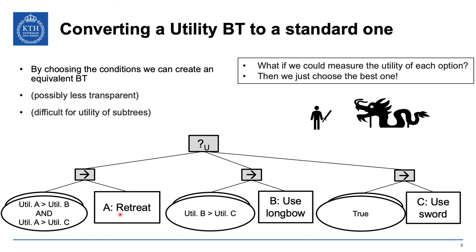If the tick reaches the second child, A wasn't the highest, so check if B's utility is higher than C's — then B runs. The last child always runs if you get that far. This creates behavior equivalent to the utility BT but as a standard BT. However, these conditions may look odd when you revisit the tree later, and adding new actions requires understanding what utility units were used and how values compare.